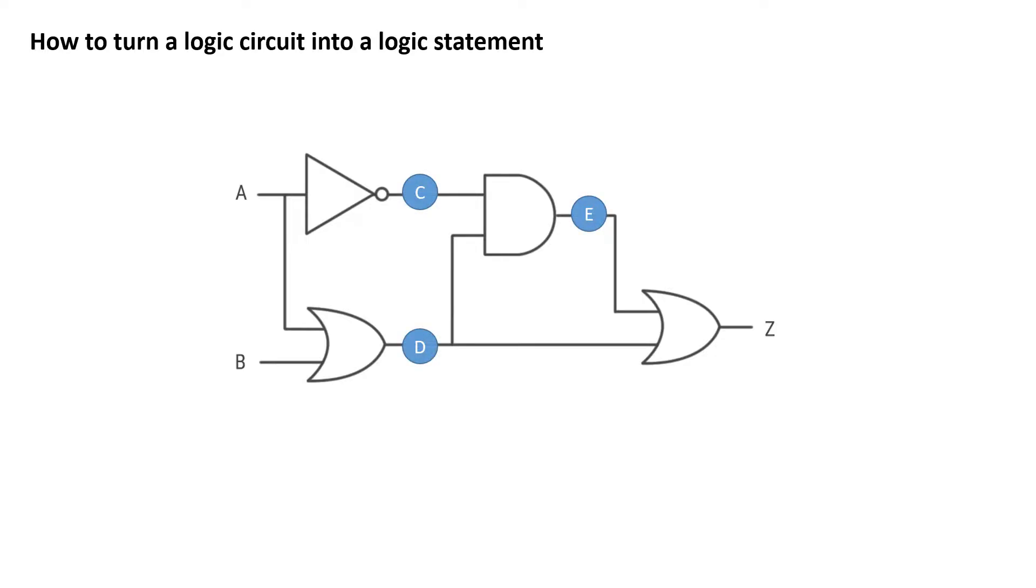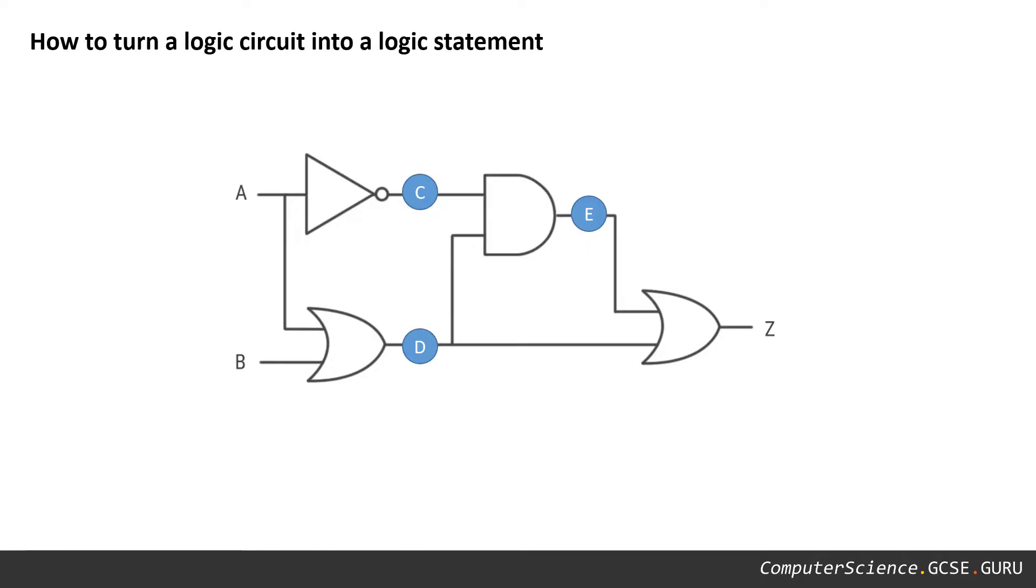The first thing we need to do before we can proceed is to add some extra letters to our circuit diagram. These intermediate points are just there to help us work things out later on, and I've chosen letters that don't exist already, in this case C, D and E.